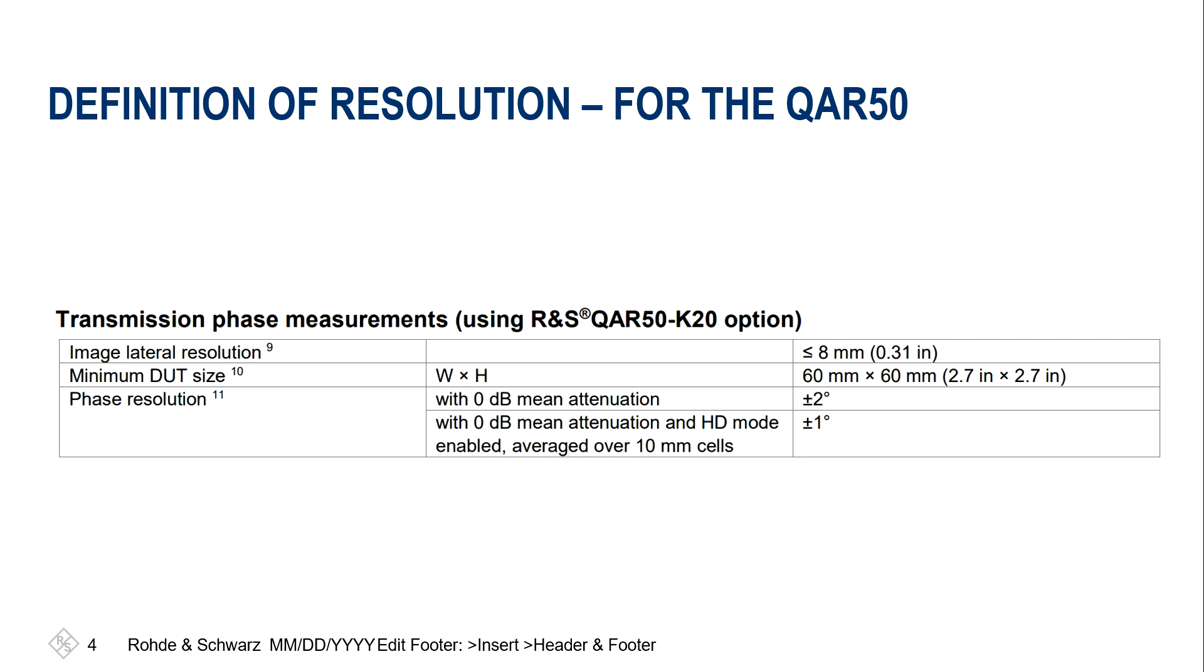When we look into the data sheet, what did we actually come up with? Here you see the line image lateral resolution, which is depicted as smaller than 8 millimeters. How did we get to these 8 millimeters if we don't know what to actually do?